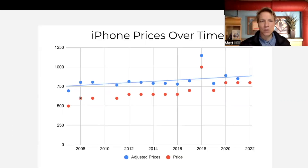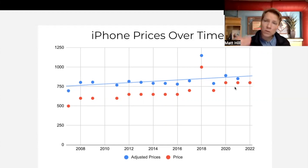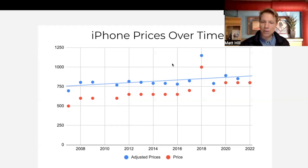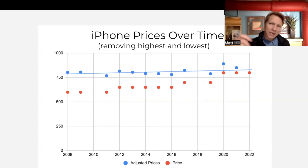Here we have the prices. The red dot is the actual price of the iPhone over time, and this is just the basic iPhone. The blue dot shows the price adjusted for inflation to 2022 dollars. In general, they've gone up in price since 2007, but if you look at the 2008 and 2022 ones, there's not much difference once you adjust for inflation. The blue trend line shows that if you take out the high and low data points, it's a much flatter trend line — it really hasn't changed much.